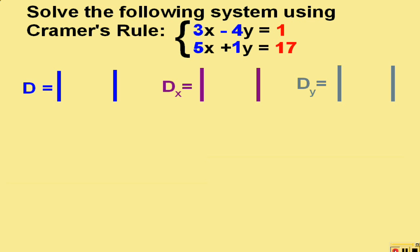The three determinants we need are what we will call D, D sub x, and D sub y. In order to get D, we use the coefficients of the left side of both equations.